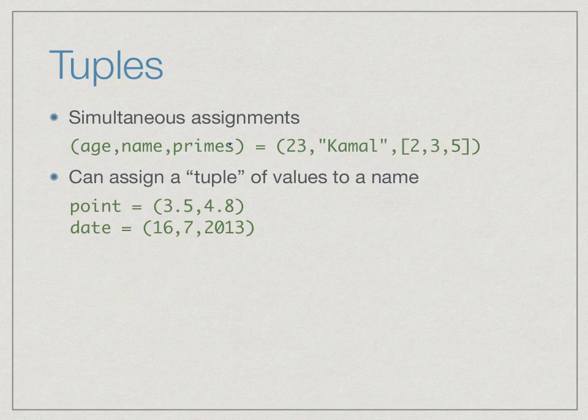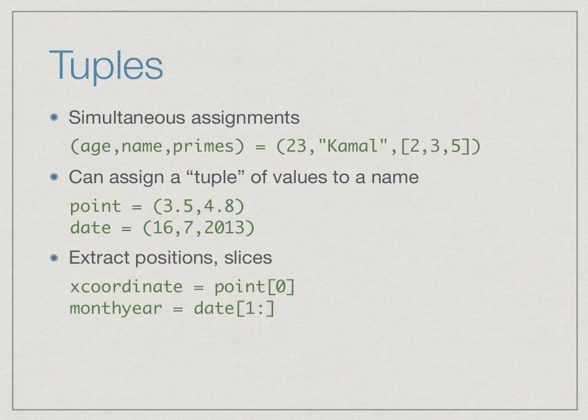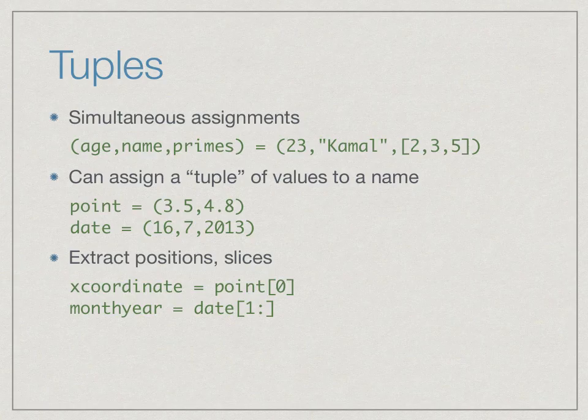This is not a list but a tuple, and we will see in a minute what the difference is. Similarly, a date can be made up of three parts: a day, a month, and a year, enclosed as a triple. A tuple behaves like a list — it is a kind of sequence. So like strings and lists, in a tuple you can extract one element: the zeroth value in point is the x coordinate, which would assign the value 3.5 to the name x_coordinate.